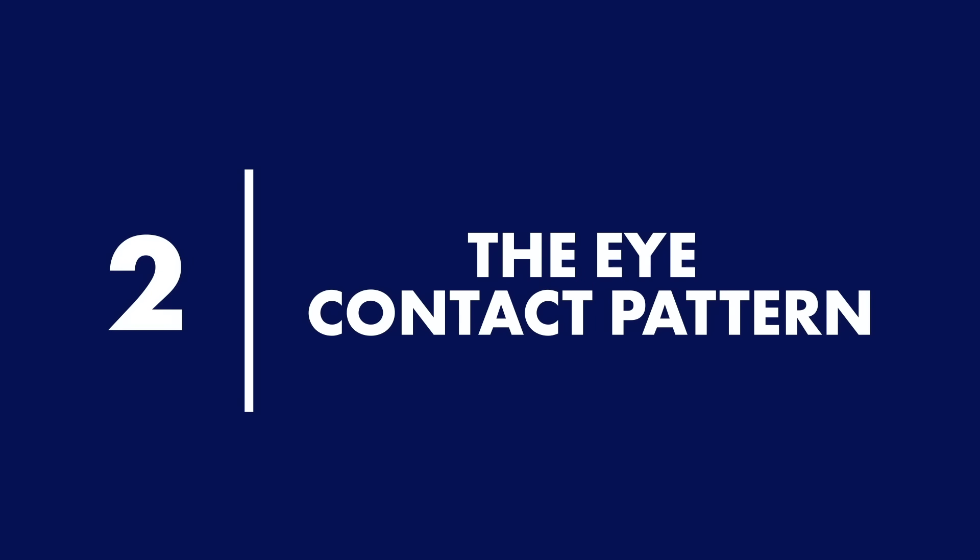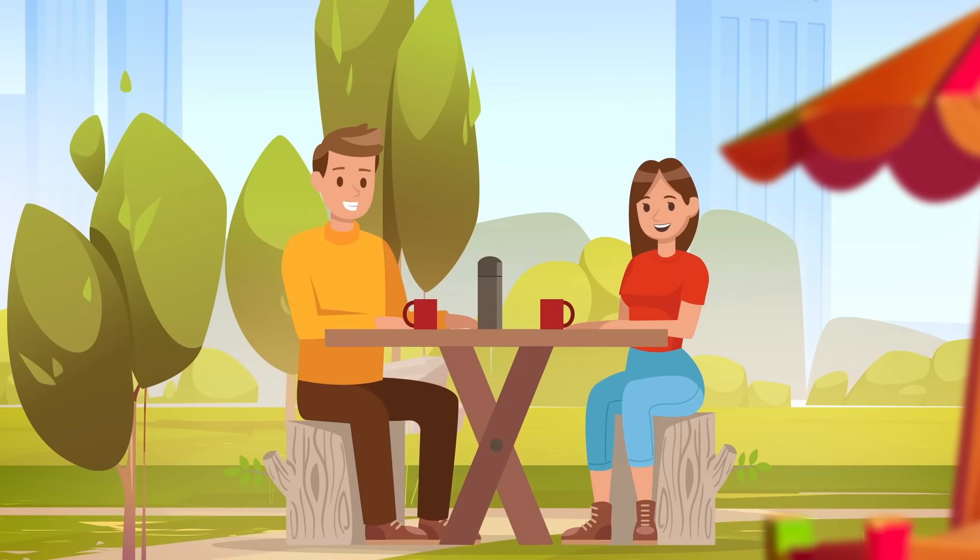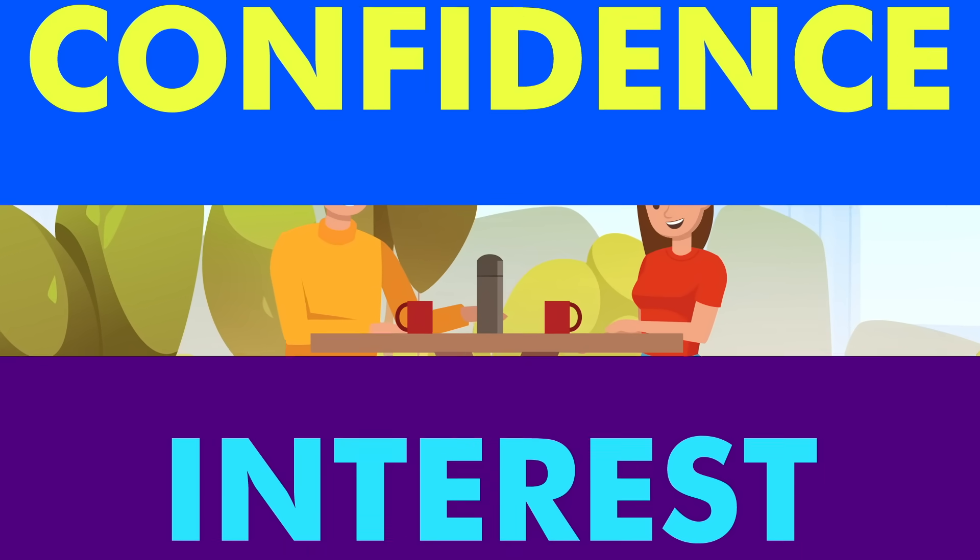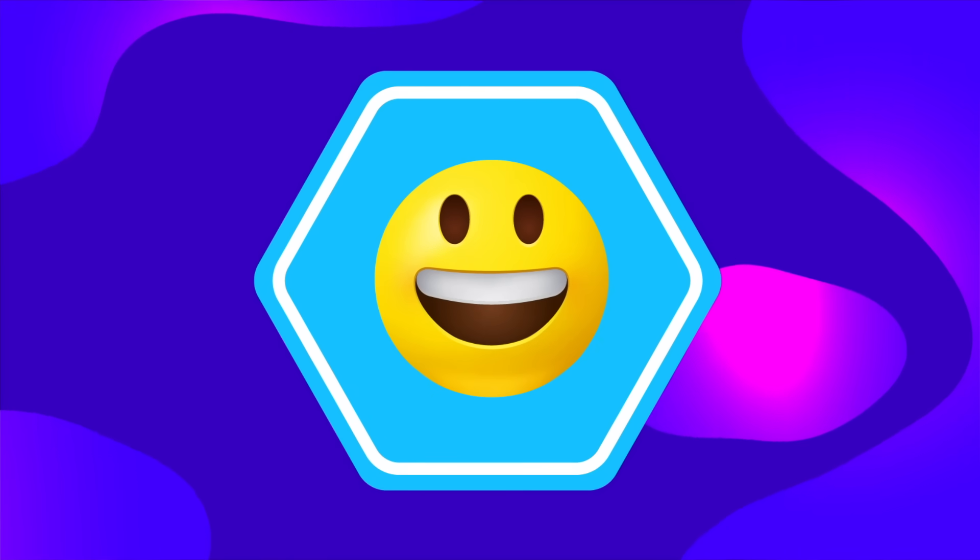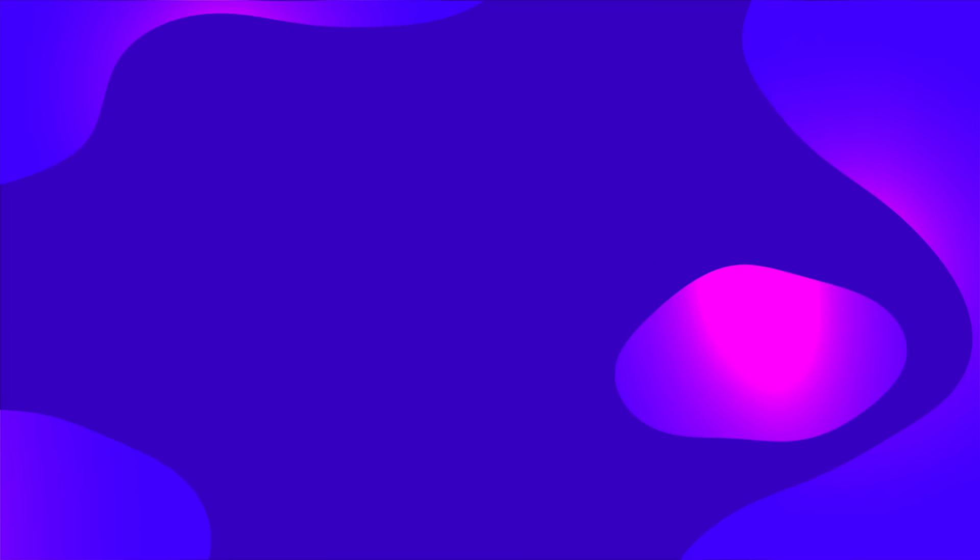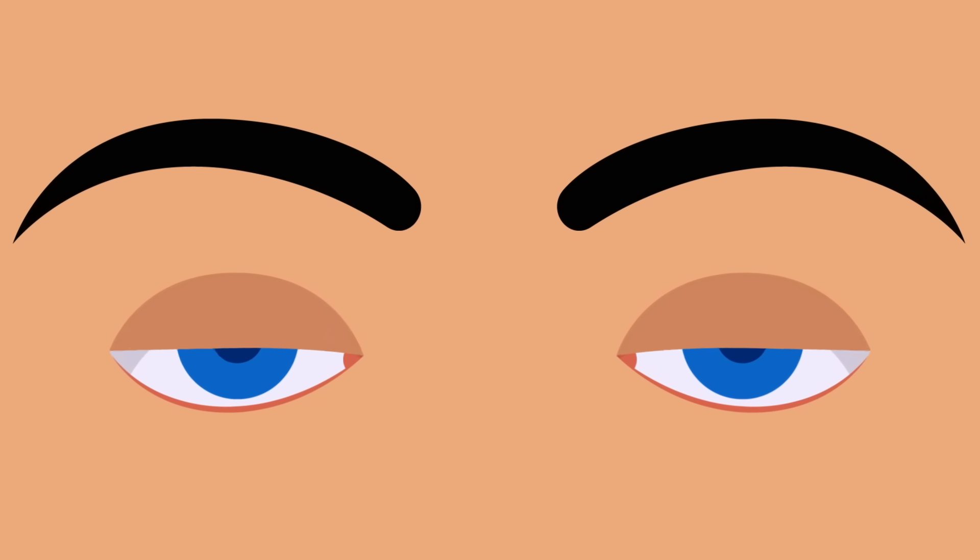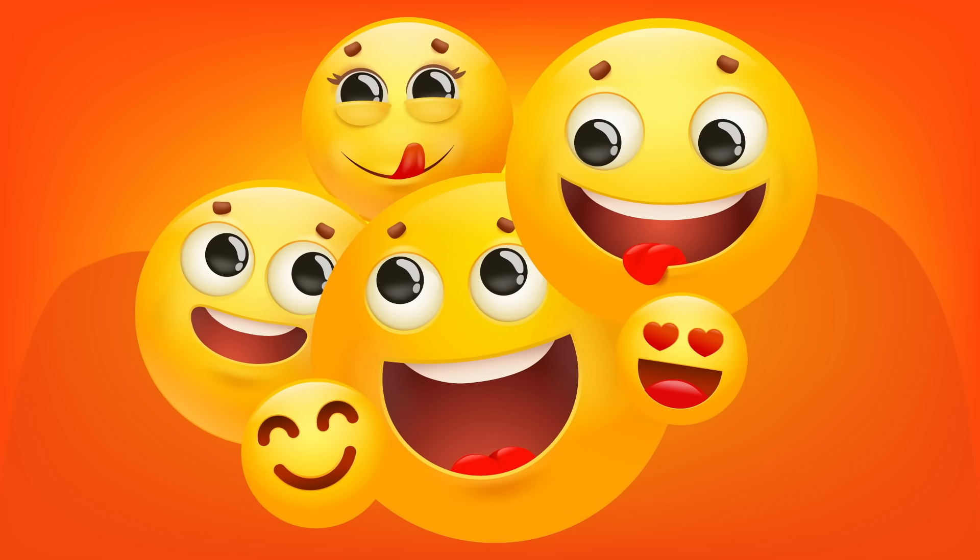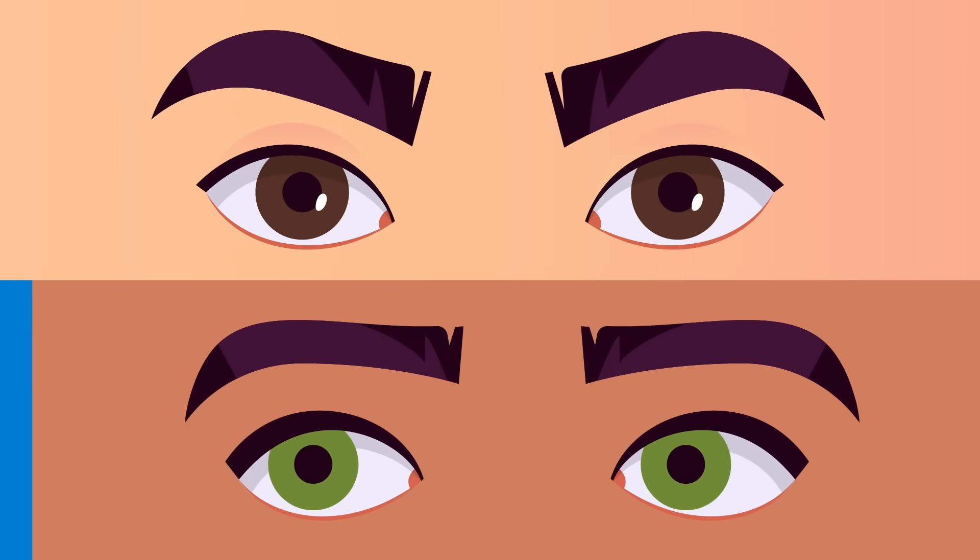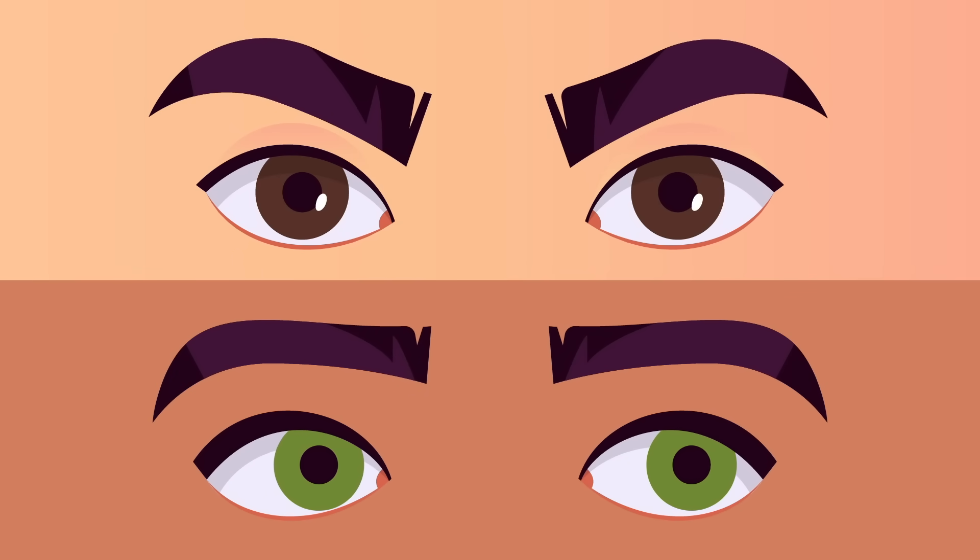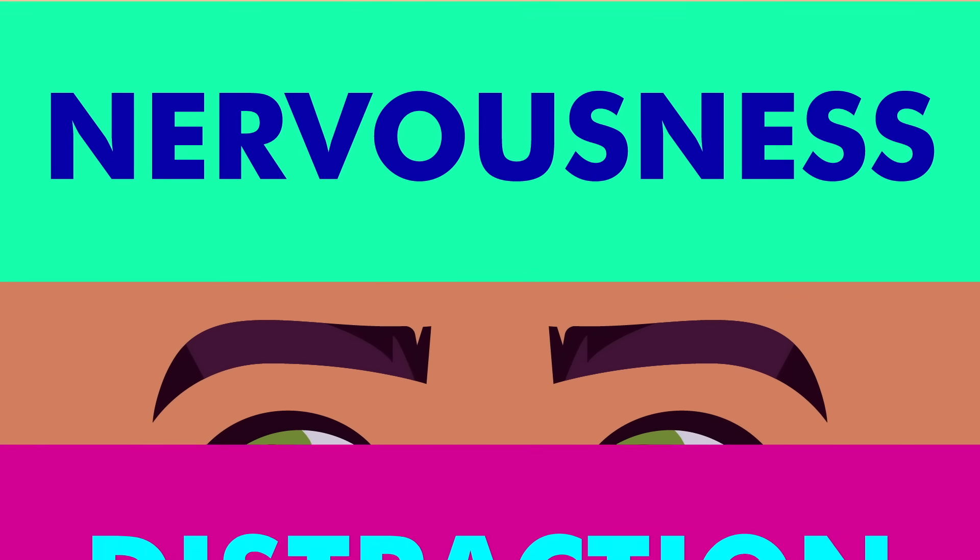2. The Eye Contact Pattern. Maintaining eye contact with a potential partner shows confidence and interest. Meet someone's gaze directly for a few seconds, and then briefly look away or smile. Then, meet their eyes again and repeat. This simple pattern displays that you find them intriguing, but you're not overbearing. Prolonged staring can feel aggressive, while constantly shifting eyes conveys nervousness or distraction.